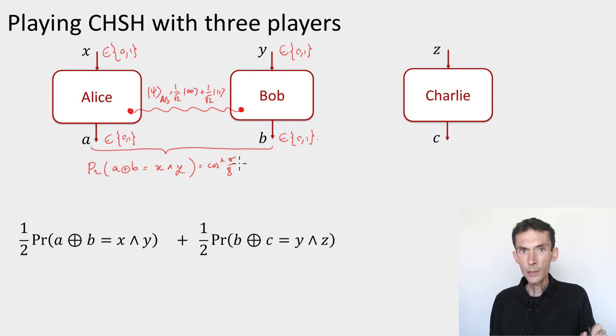Now I can imagine playing the exact same game instead of between Alice and Bob, I can also play the game between Bob and Charlie. So I would provide an input z, chosen uniformly at random in {0, 1} to Charlie. Charlie has to produce an output c.